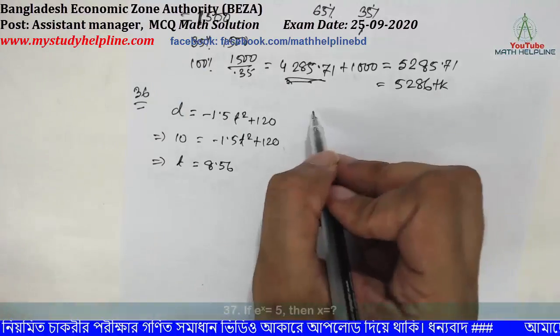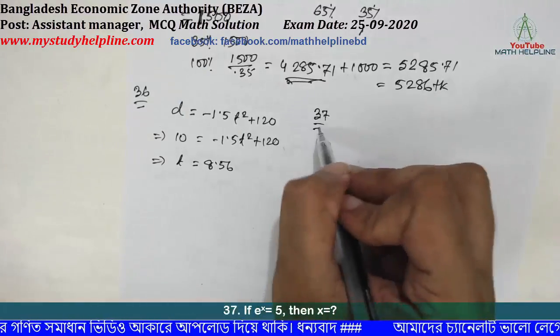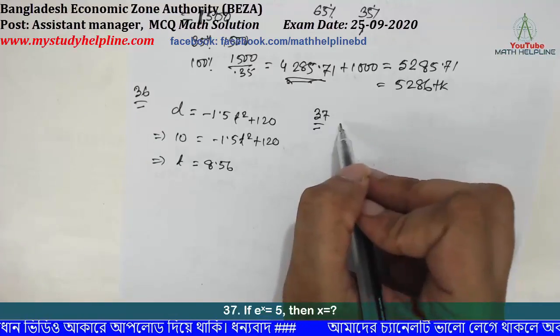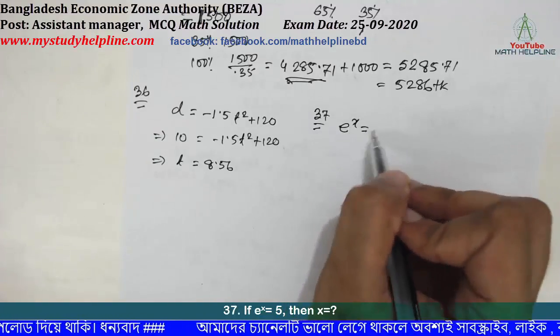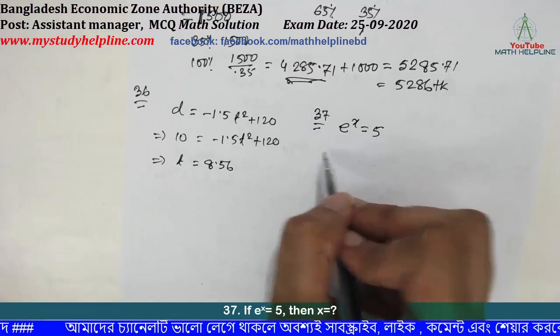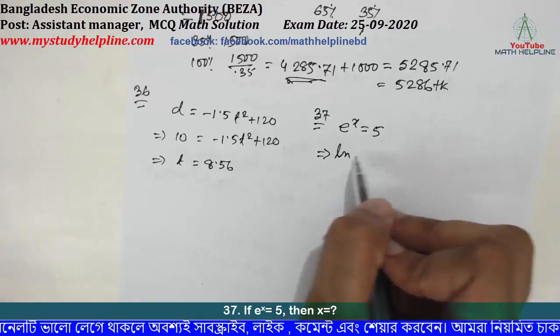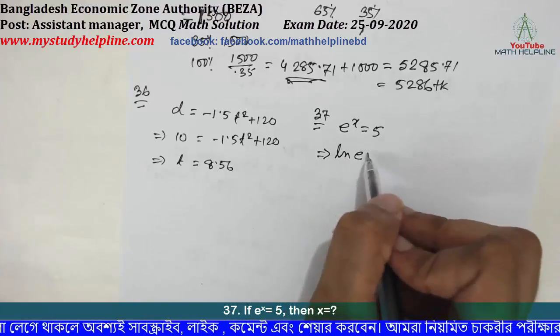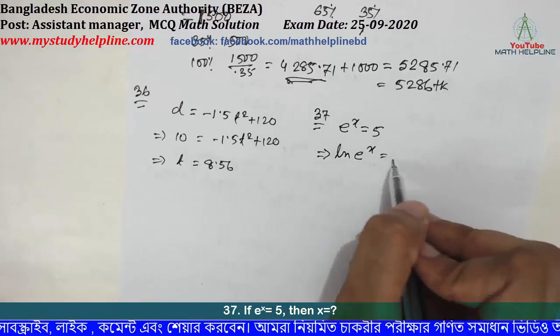Number 37: if e^x = 5, then x = what? To solve e^x, we take the natural logarithm of both sides: x = ln(5).